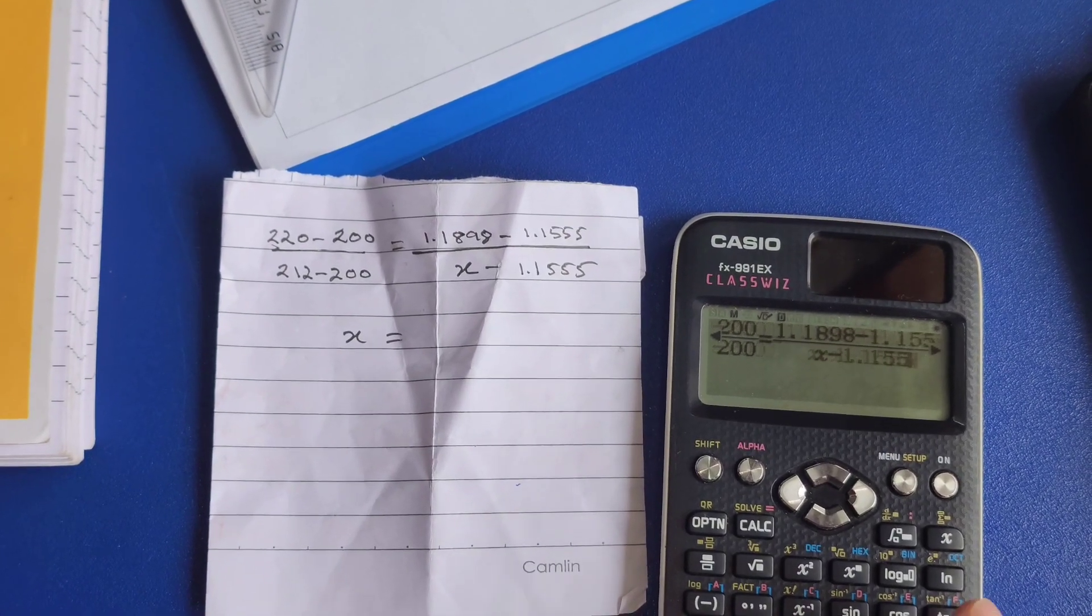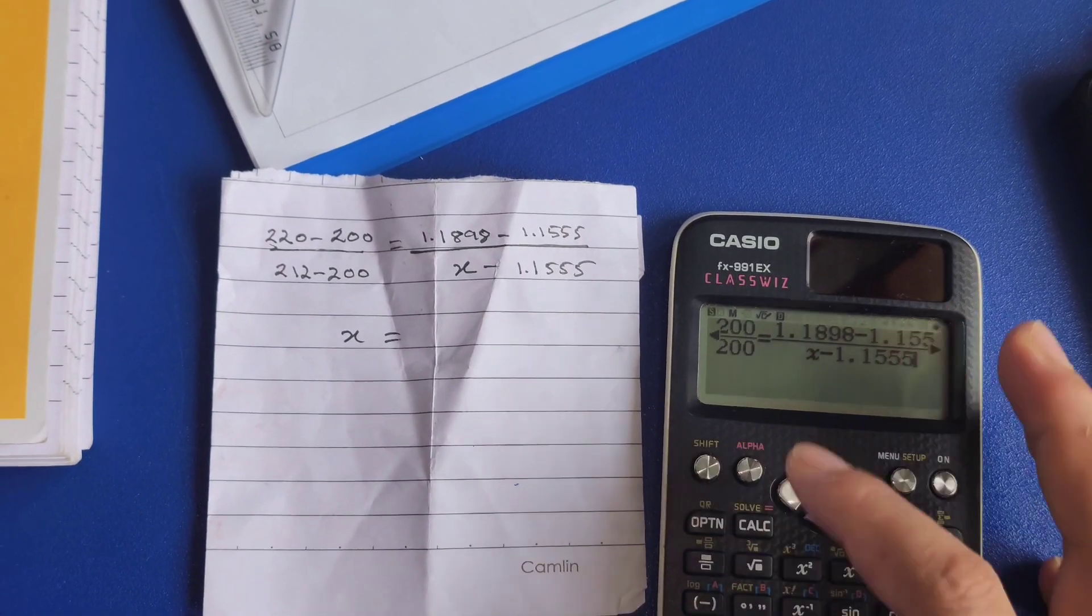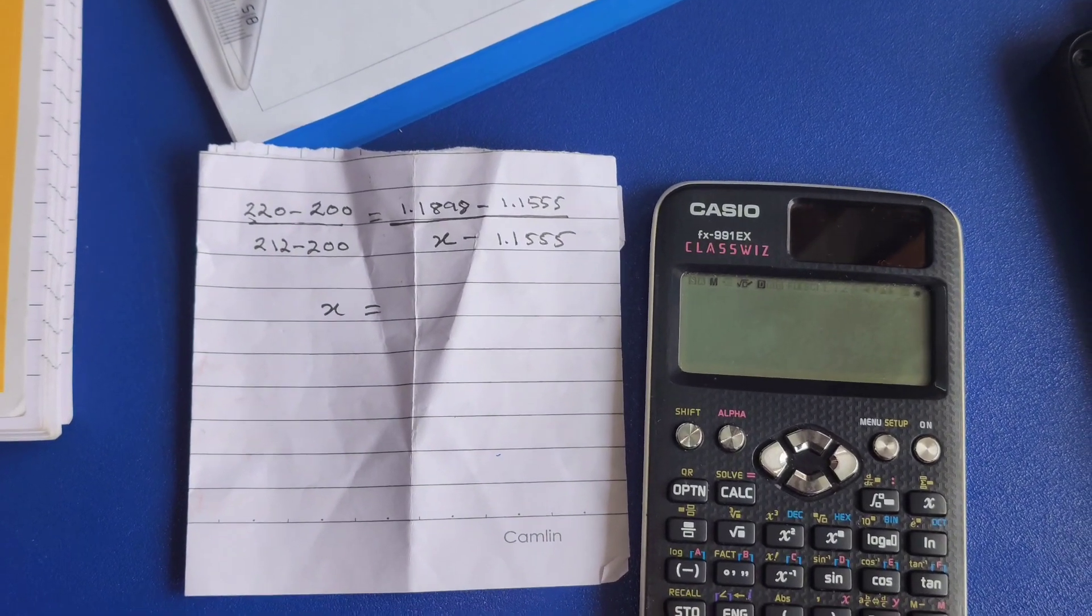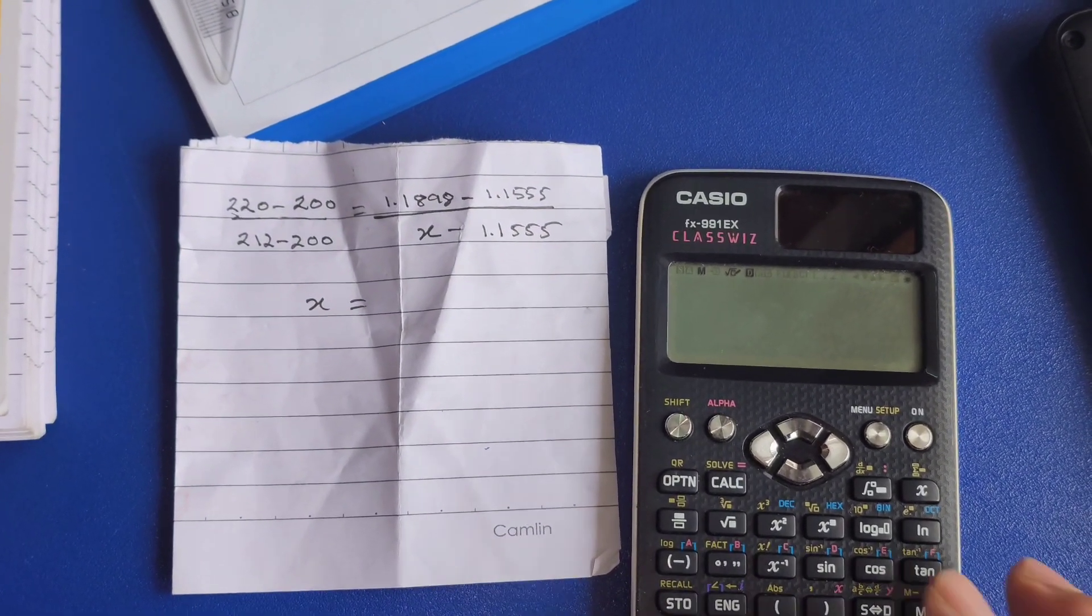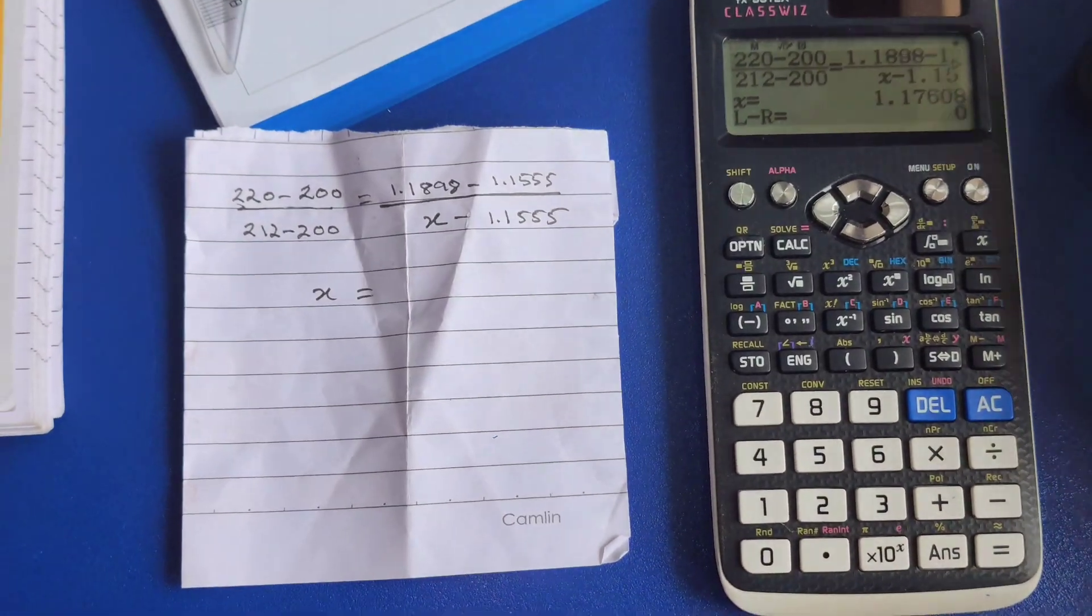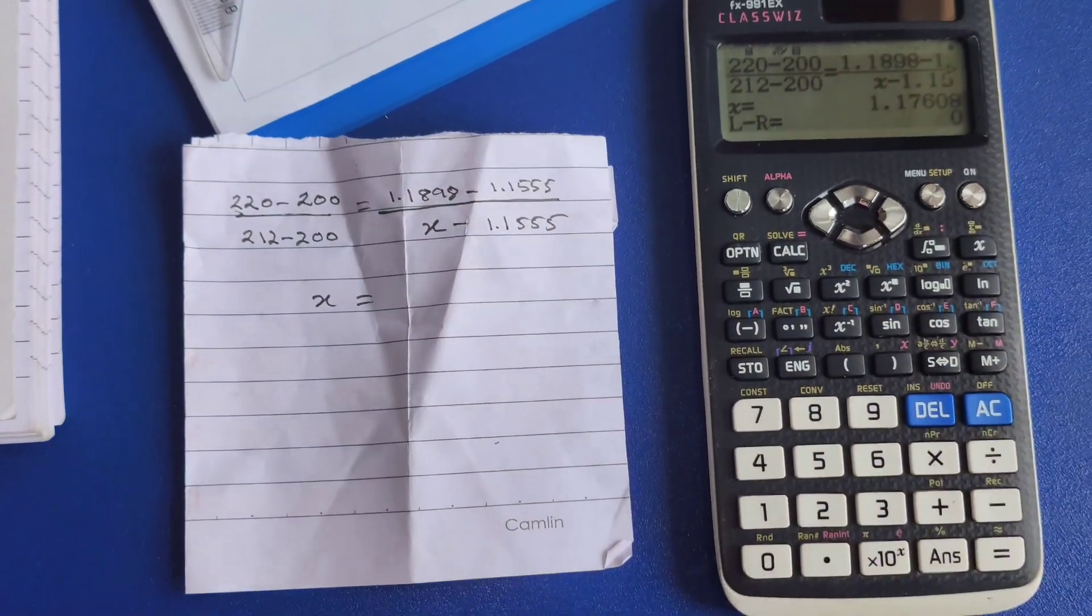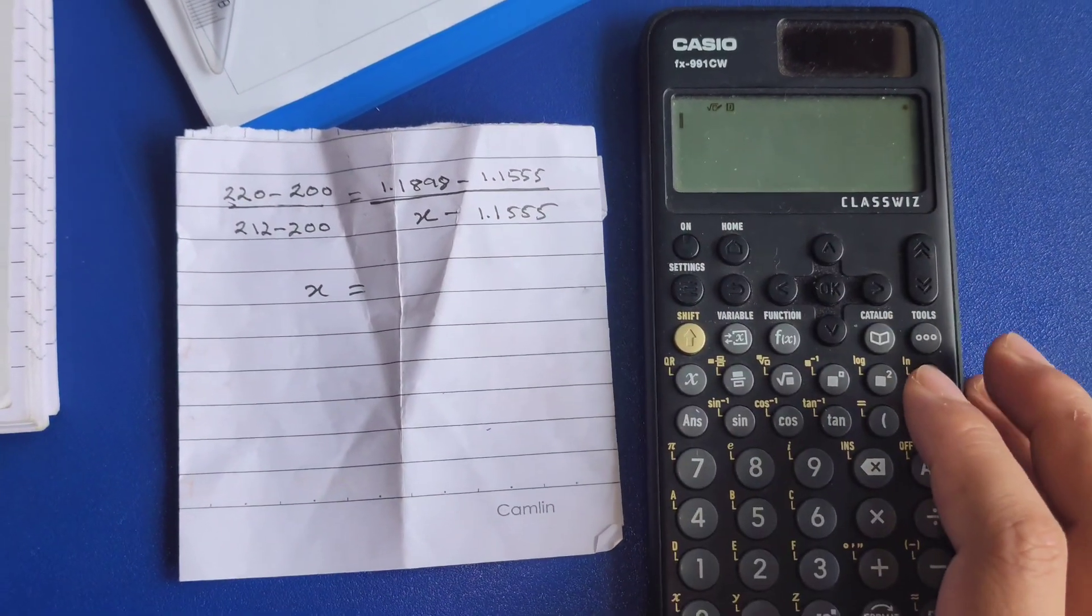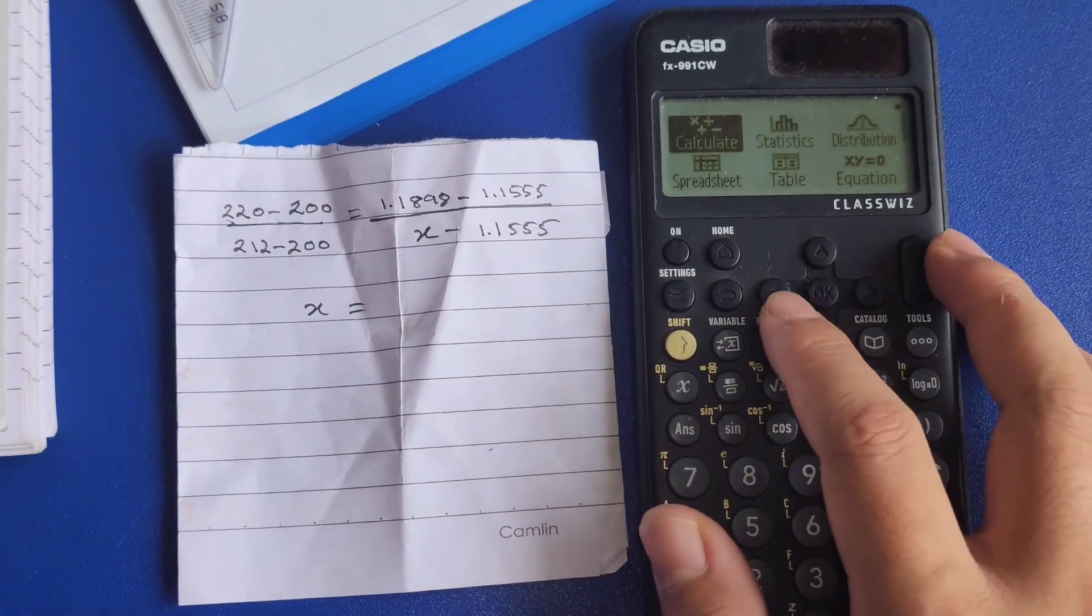The equation is on a piece of paper, so here we go. First go to the home button.